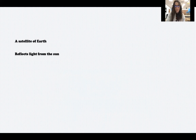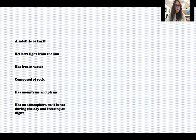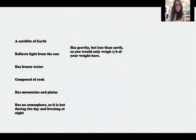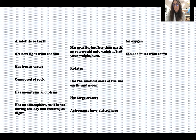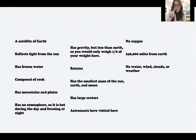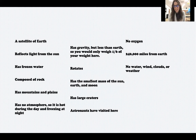Here are your clues: it's a satellite of earth, it reflects light from the sun, it has frozen water, it's made of rock, it has mountains and plains, it has no atmosphere — so it is hot during the day and freezing cold at night with nothing to trap the heat in. It has gravity but less gravity than earth, meaning you would weigh only one sixth of your weight here. It rotates, has the smallest mass of the three, has large craters, astronauts have visited here, it has no oxygen, it's 240,000 miles from earth, and no water, wind, clouds, or weather — it does have frozen water but no liquid water. Hopefully you came up with that we are discussing the moon.